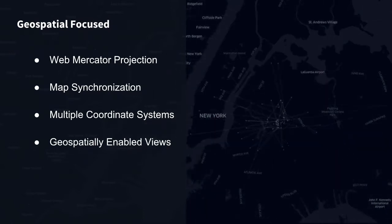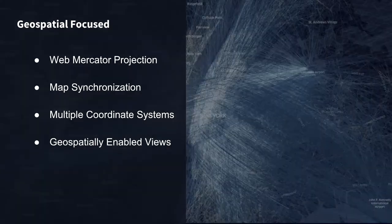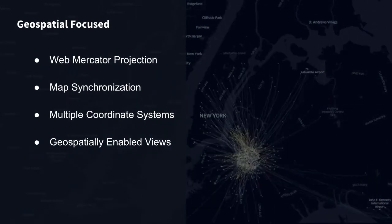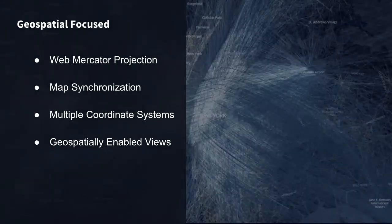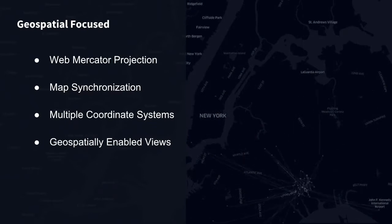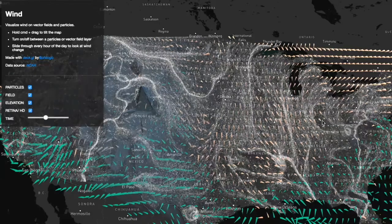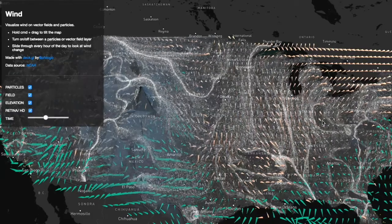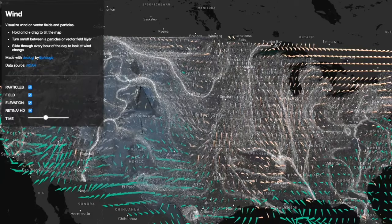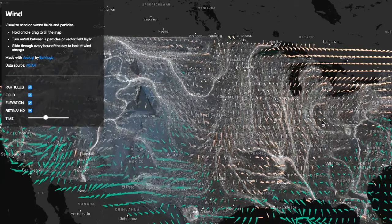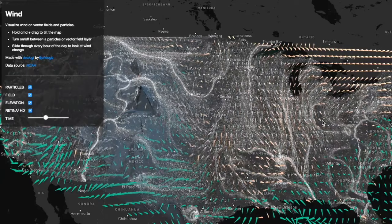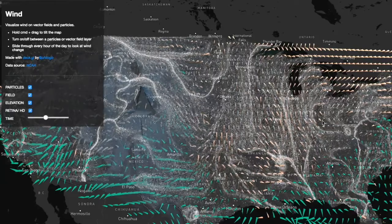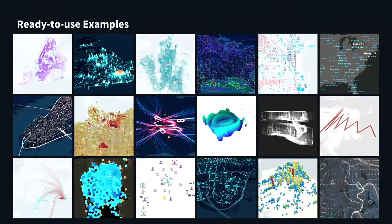Deck GL also handles a lot of geospatial operations inside your GPU — you don't have to worry about it. We do map projection inside the GPU; we calculate camera viewpoint inside the GPU. That's why you're able to get rendering of 300,000 points — in this case actually a million particles — in the browser smoothly. This is a wind map that Yang made; it's quite awesome, and all of this happens in your browser. Deck GL is open source and we have a lot of examples hosted on Deck GL's website. You can take any of the examples and start your own map application with Deck GL fairly easily.